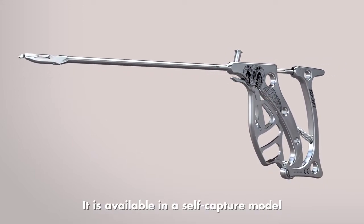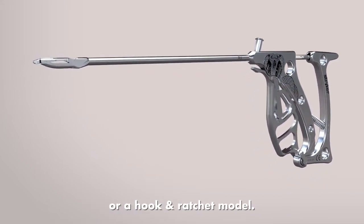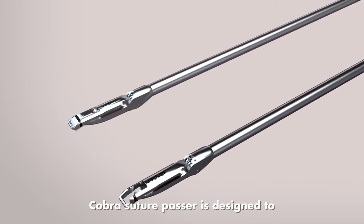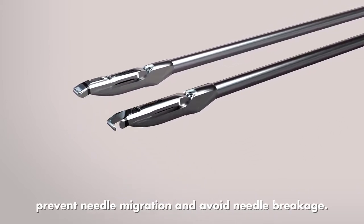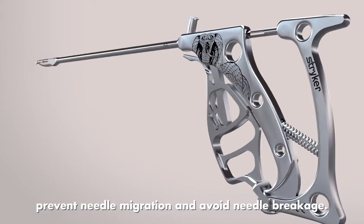It is available in a self-capture model or a hook and ratchet model. COBRA Suture Passer is designed to eliminate a disposable needle, prevent needle migration, and avoid needle breakage.